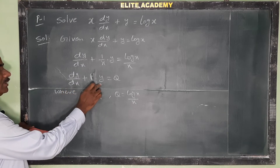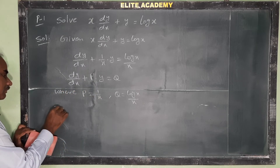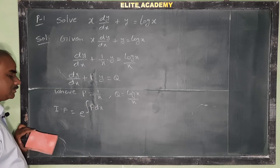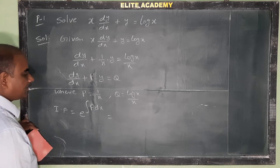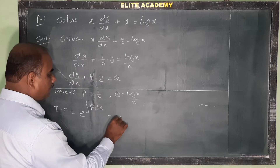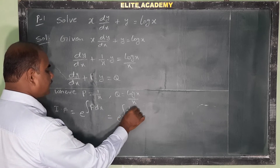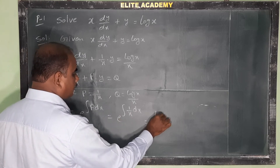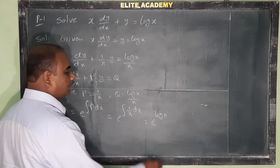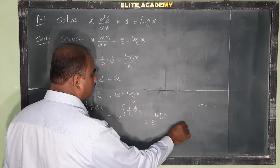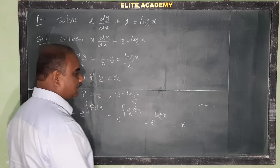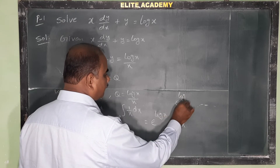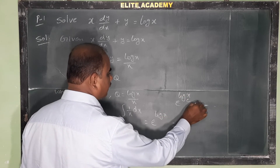For the linear differential equation in terms of y, the integrating factor is equal to e power integral P dx. This is the formula to find the integrating factor. So, e power integral of P, which is 1 by x dx. The integral of 1 by x dx is log x, so integrating factor is e power log x, which simplifies to x.